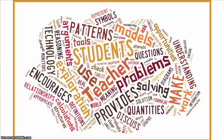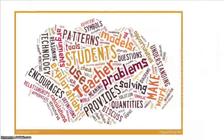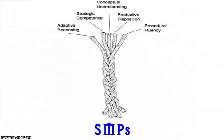The first of these are the NCTM Process Standards of Problem Solving, Reasoning and Proof, Communication, Representation, and Connections. The second are the strands of mathematical proficiency specified in the National Research Council's report, Adding It Up: adaptive reasoning, strategic competence, conceptual understanding, procedural fluency, and productive disposition.